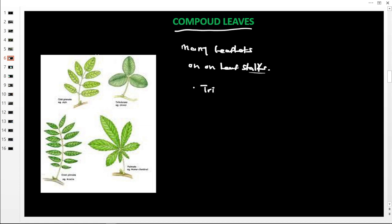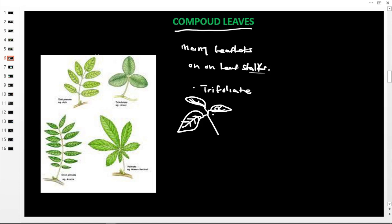Let us start with compound trifoliate. From our word bank, trifoliate means three, and foliate means leaflets. So this leaf has three leaflets. This is the main leafstock, which divides into smaller leafstocks, each forming a leaflet — one, two, three. This is a compound trifoliate, and it is characteristic of bean plants.